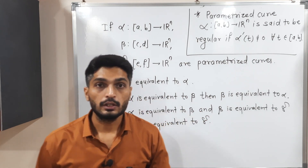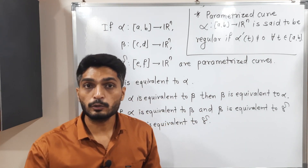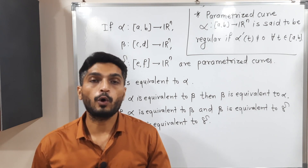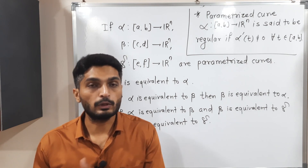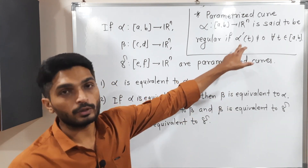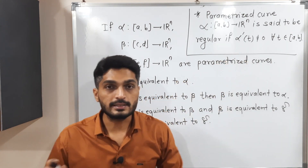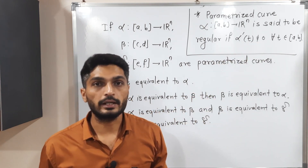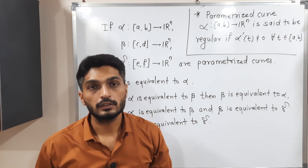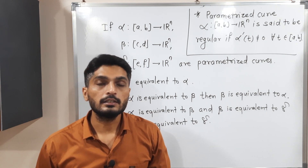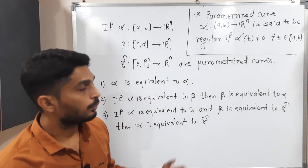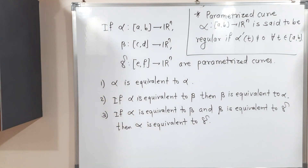After that, let us discuss regular parameterization. A parameterization is said to be regular if its derivative is non-zero for all values of t in the given interval [a, b]. That means it is possible to draw a non-vanishing tangent at every point, and then we can declare it a regular parameterization.